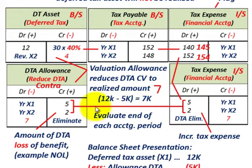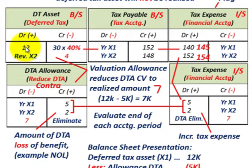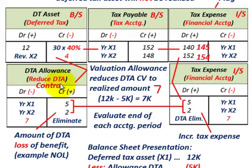We evaluate at the end of each accounting period. For year X2, let's say we realize that another $2,000 of this deferred tax asset isn't going to be realized. In that case, we credit or increase our deferred tax asset allowance account by $2,000. So we've got our deferred tax allowance account — the contra account — reducing our deferred tax asset: crediting $5,000 for year X1 and $2,000 for year X2.